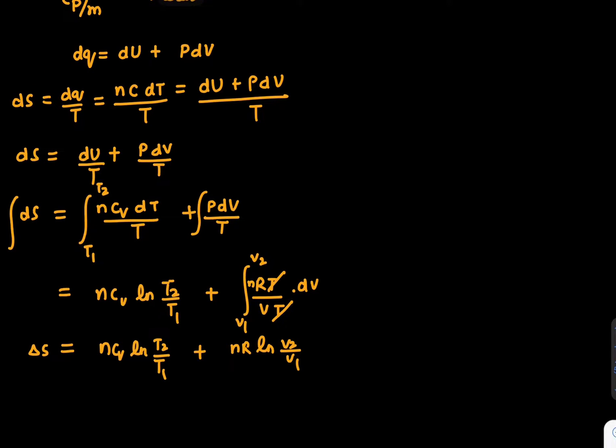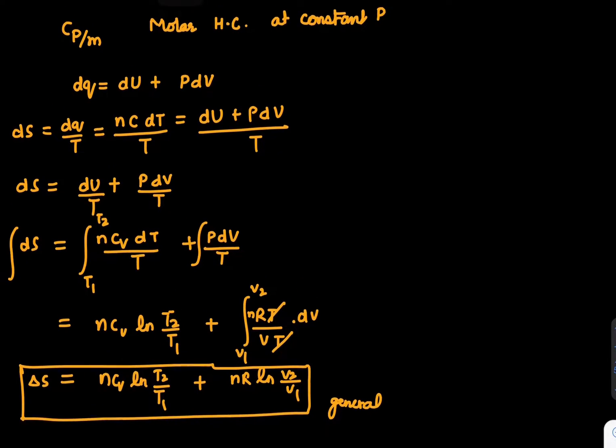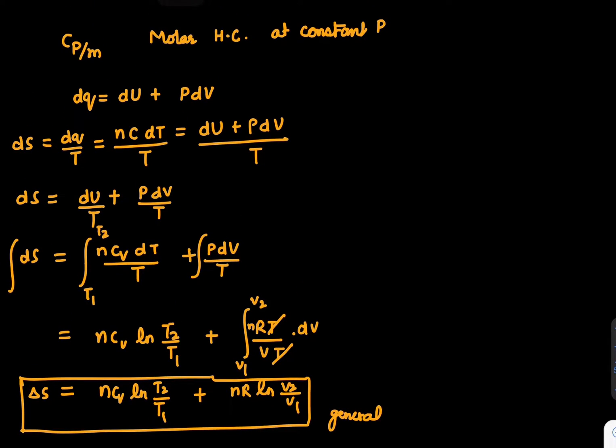This result we have written here is a general result. In this case, I'm not taking any assumption—it's for a reversible process. What are different outcomes of this result? Let's discuss different outcomes.